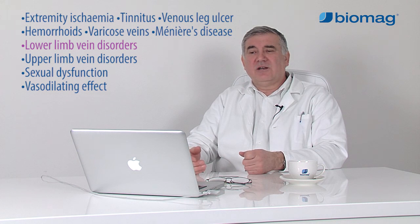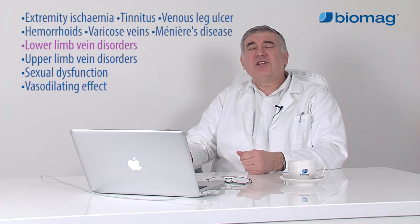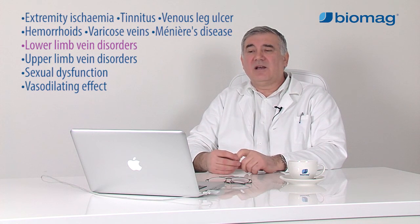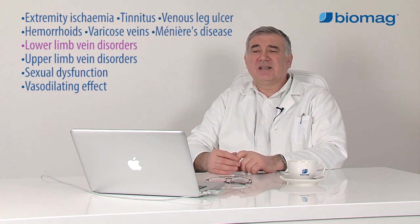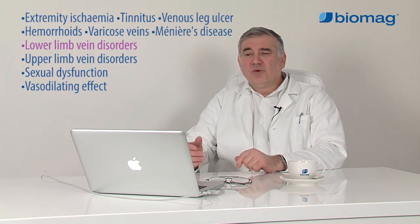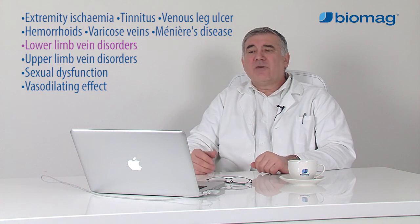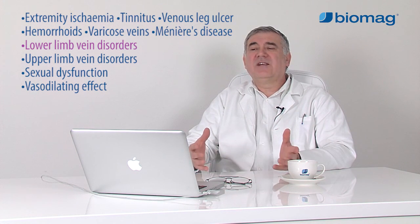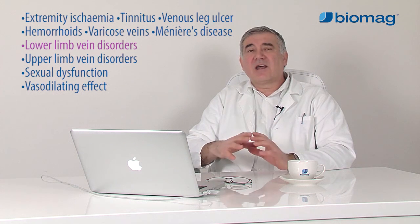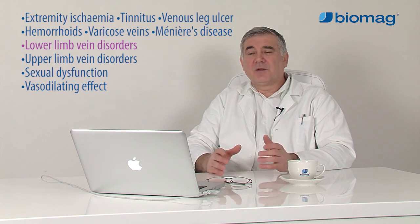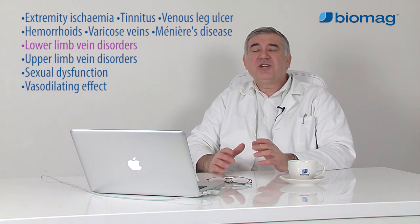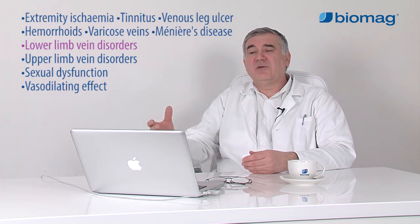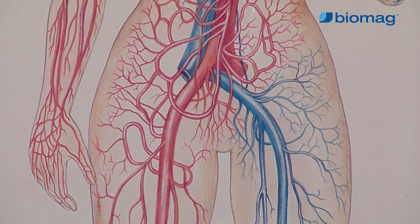In ischemic diseases of the lower limbs, arteriosclerosis and thrombus are the most frequent cause of occlusion or narrowing of the arteries. In the case of Buerger's disease, vasoconstriction due to damage to the autonomic nerves that regulate the vascular lumen is the cause. The condition always requires a professional vascular examination and targeted treatment, or diet modification and a wide range of lifestyle changes.